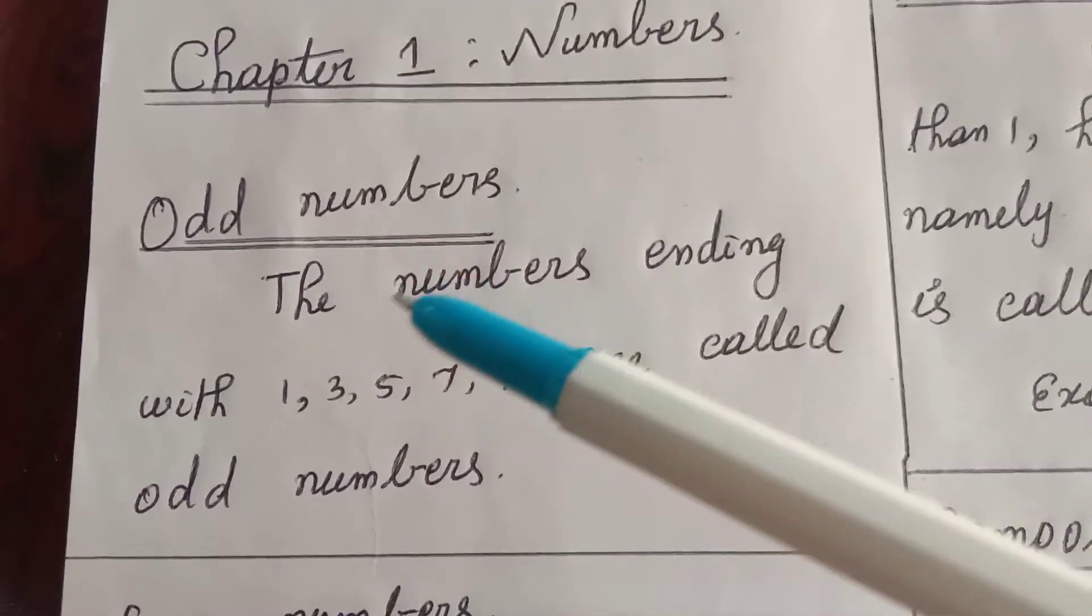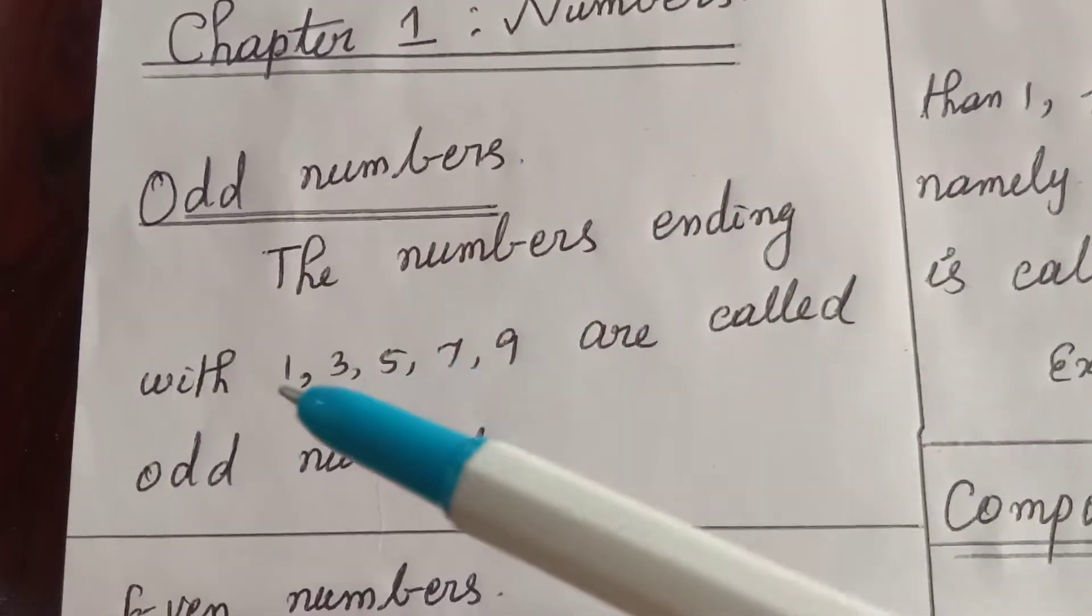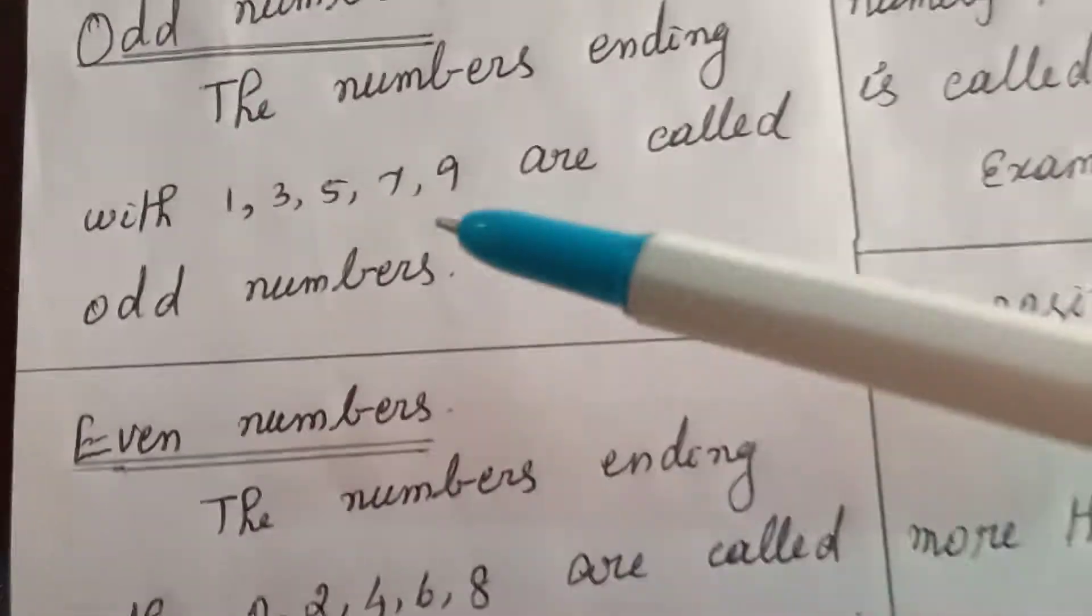First one, odd numbers. The numbers ending with 1, 3, 5, 7, 9 are called odd numbers.